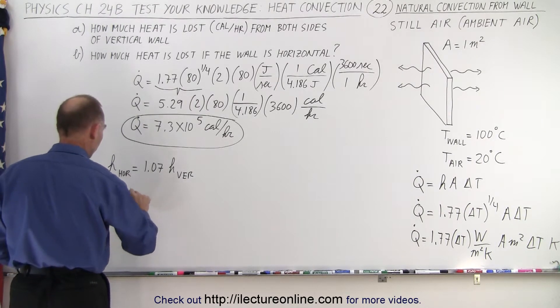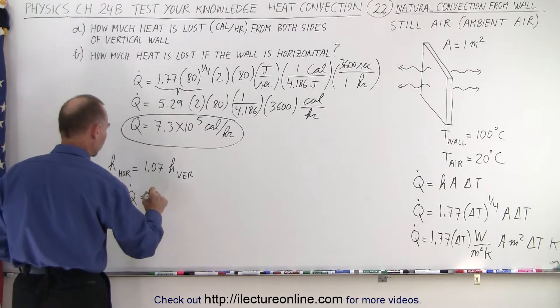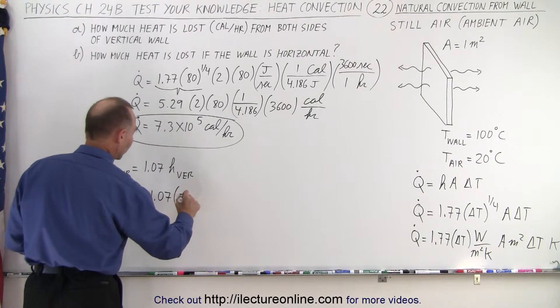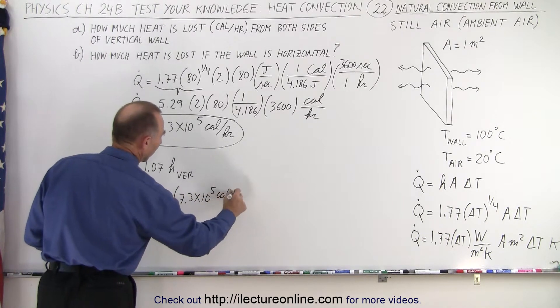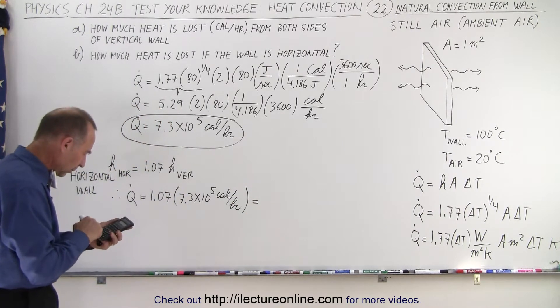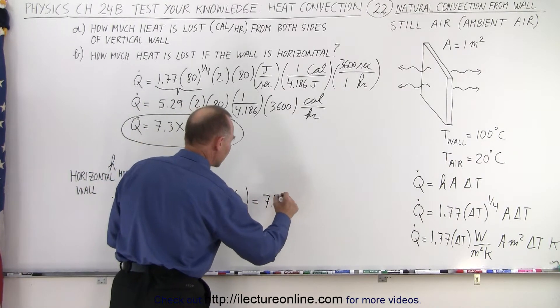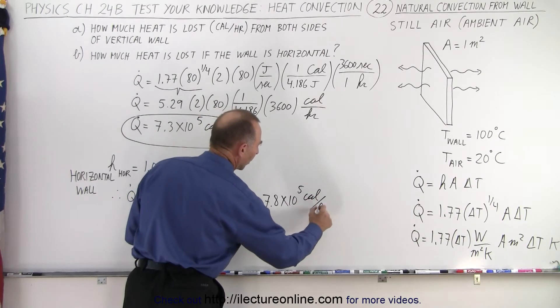So for a horizontal wall, Q dot will be equal to 1.07 times the 7.3 times 10 to the fifth calories per hour. And so times 1.07, and that gives us about 7.8 times 10 to the fifth calories per hour.